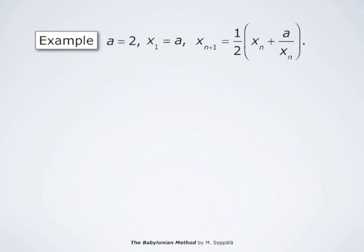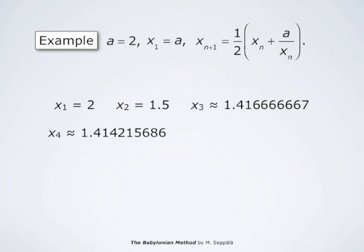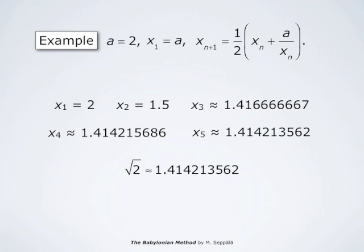As an example, let a = 2, x_1 = 2, and x_{n+1} = ½(x_n + 2/x_n). According to the result just obtained, this sequence converges to √2. We have: x_1 = 2, x_2 = 3/2, x_3 ≈ 1.416666667, x_4 ≈ 1.414215686, and x_5 ≈ 1.414213562. This is already a 10-digit approximation of √2, so x_5 gives a very good approximation.